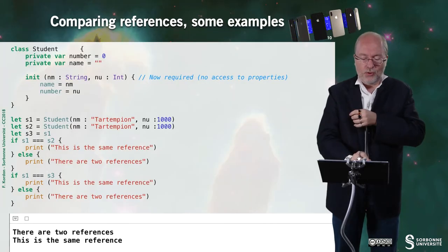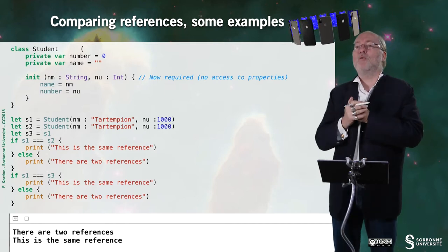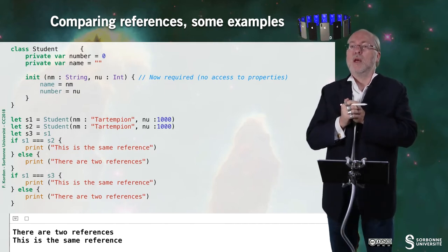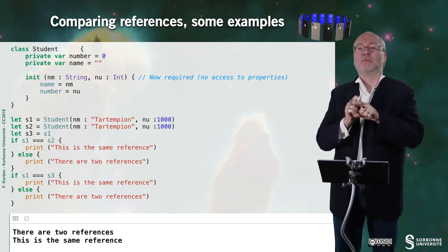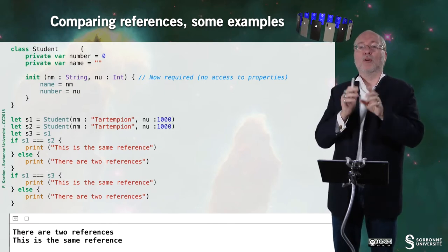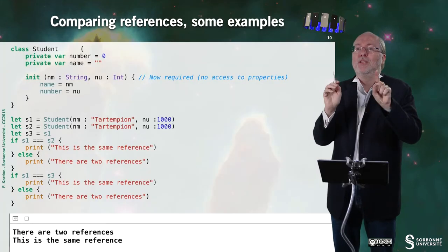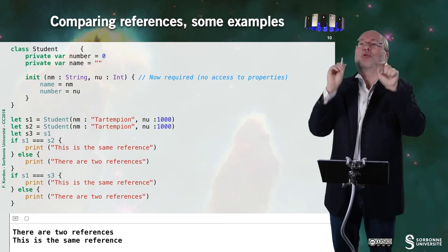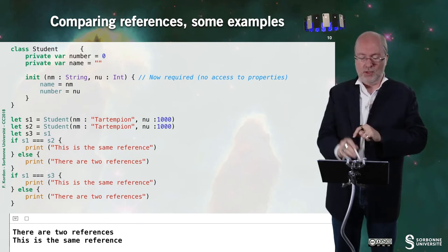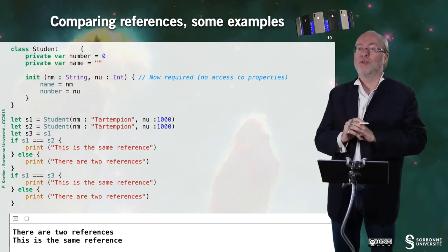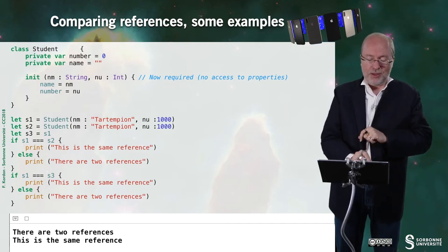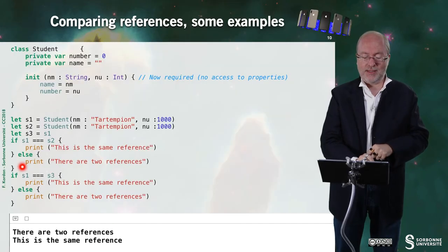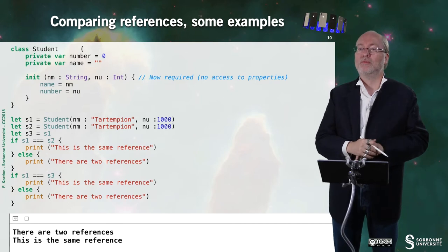So if I do S1 equal, equal, equal S2, then I am comparing the two references. And of course, S1 and S2, they refer to the same student, but not the same memory space. The references are different even if the contents are exactly the same. So in fact, this test will answer false. But if I do that between S1 and S3 are exactly the same reference. So that test will return true.